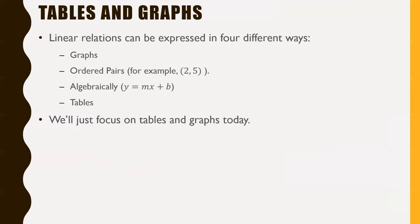There are actually four different ways we can represent linear relations. In Math 9, these four ways spell out GOAT — G-O-A-T — and that's graphs, ordered pairs (which is a coordinate like 2, 5), algebraically (which is always in the form y = mx + b — we'll deal with that another day), and then tables.